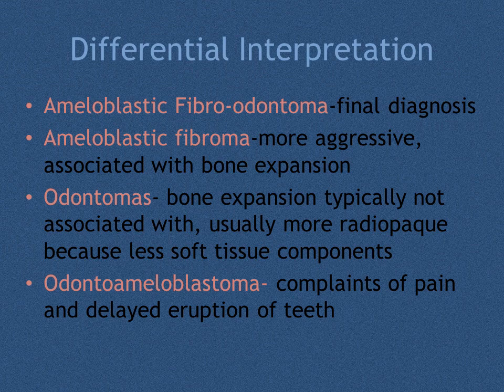Compound odontomas radiographically appear more organized and are less common in the posterior maxilla. Ameloblastic fibroma presents in a similar manner on radiographs. Ameloblastic fibromas are locally more aggressive and associated with bone expansion. The presence of dentin supports the diagnosis of ameloblastic fibroodontoma, while the lack of dentin supports ameloblastic fibroma. If calcification is not detected radiographically, it is impossible to differentiate the two.